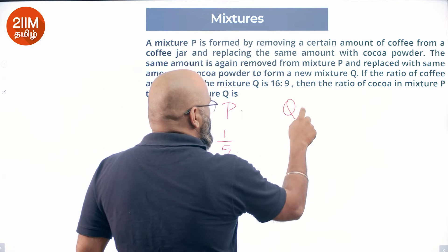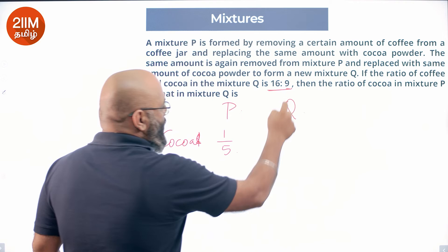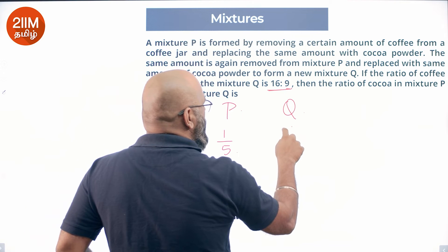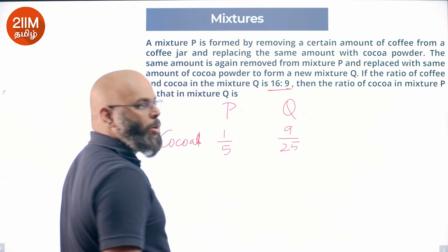But Q, second time we do it. We will get here coffee to cocoa 9 to 16. And we will say 9 by 25. Full jar has cocoa.